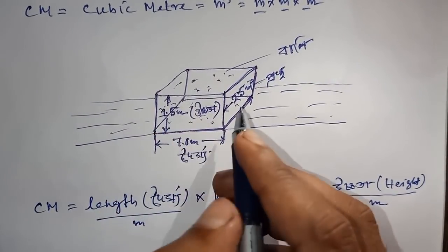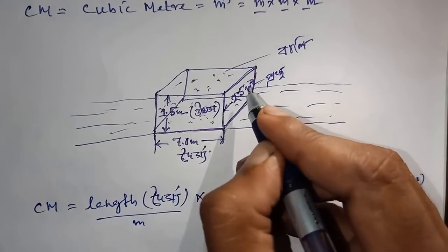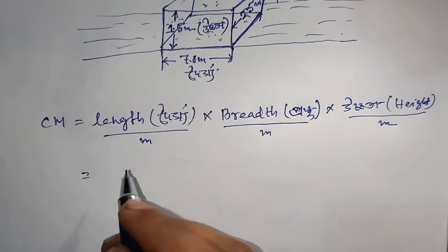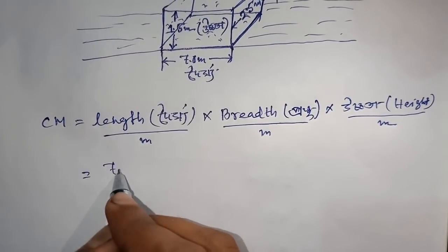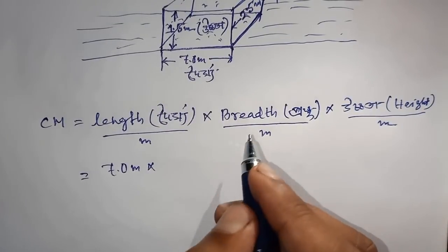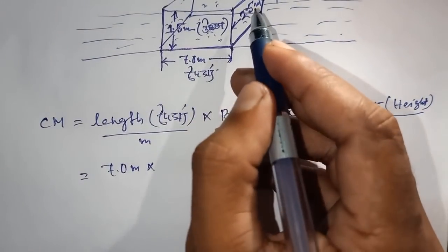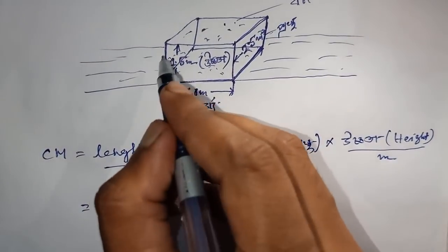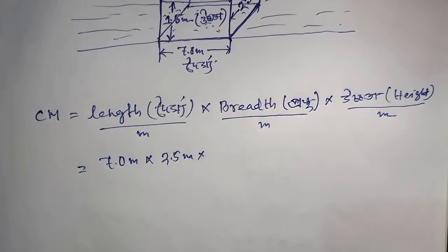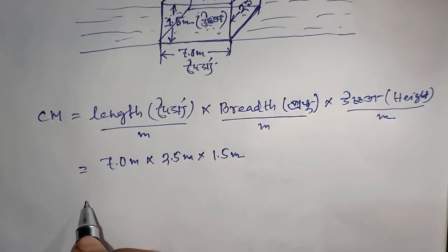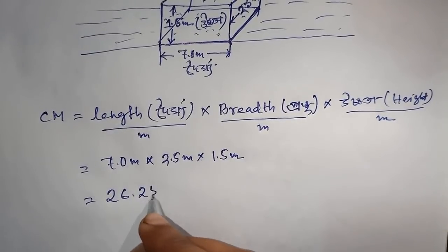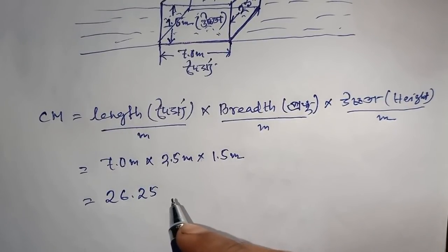So the length is 7.0 meters, breadth is 2.5 meters, and height is 1.5 meters. This gives us the first example calculation.